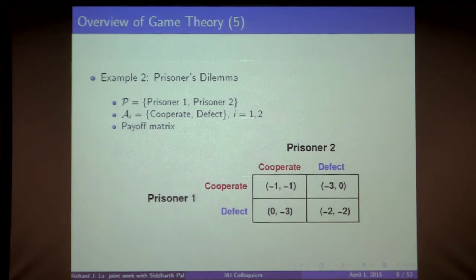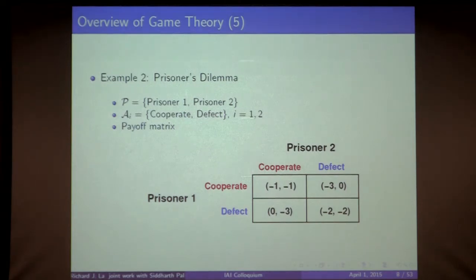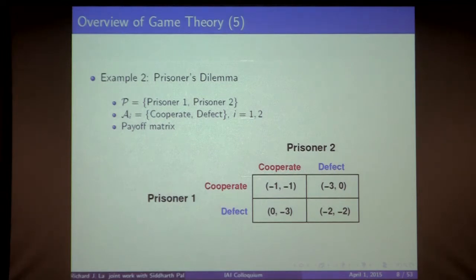The second example is the well-known Prisoner's Dilemma. Two teenagers are in custody with sketchy evidence. If they cooperate and stay silent, they spend one night in jail. If one defects and incriminates his friend, he goes free and his friend spends three days in jail. If both defect, they both spend two nights in jail. This is another example of a normal form game.